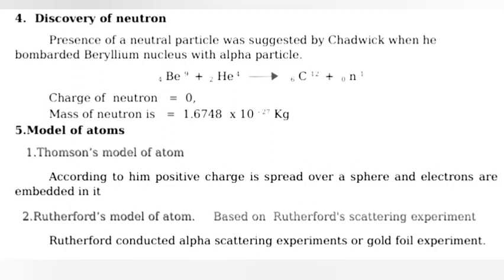Discovery of neutron: Presence of a neutral particle was suggested by Chadwick when he bombarded beryllium nucleus with alpha particles. Charge of neutron equals zero. Mass of neutron is 1.6748 x 10 raised to minus 27 kg.